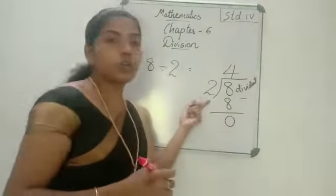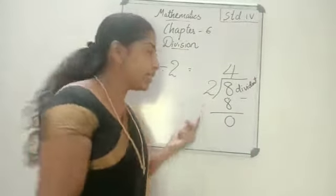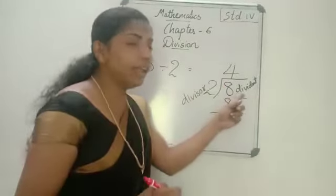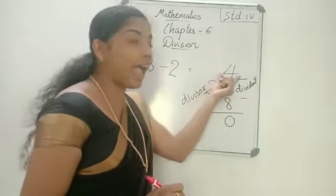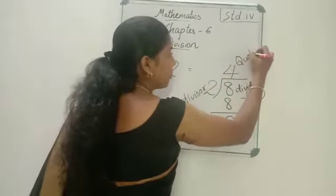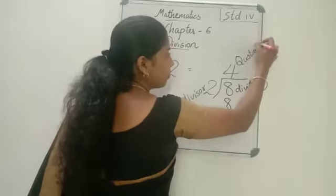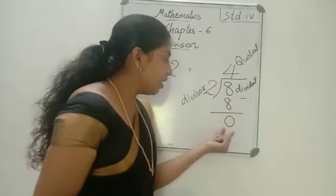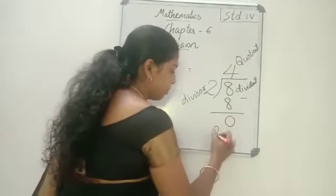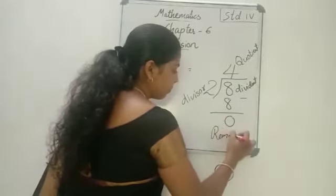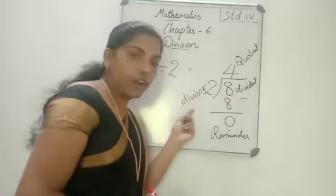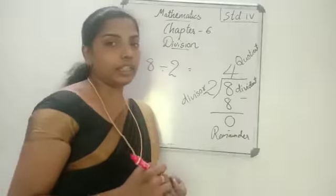Now this 2 is called divisor. Dividend, divisor, and the answer we got is called quotient.